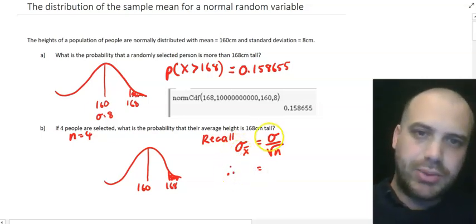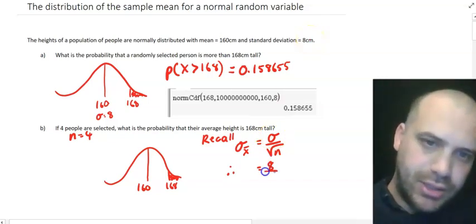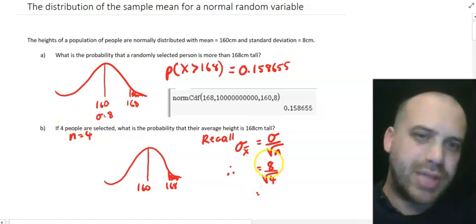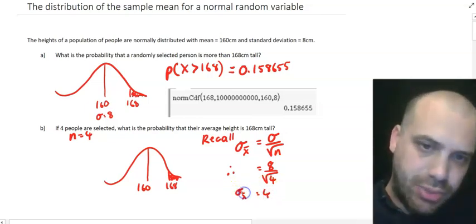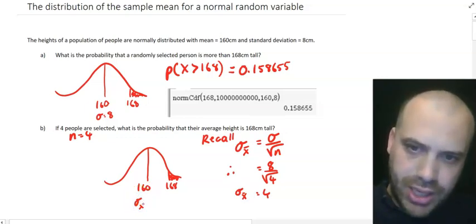It's going to be equal to the standard deviation of the population, which is 8, divided by the square root of the sample size. So that's the same as 8 divided by 2, which is 4. We know that the standard deviation of our sample mean is 4. So let's put that information in here as well.